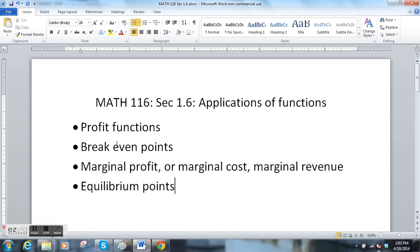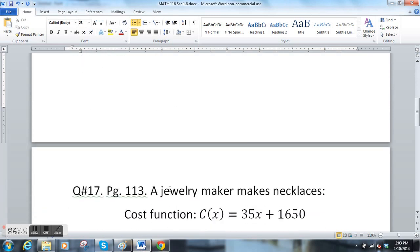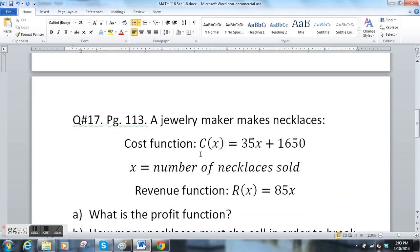I'm going to introduce all three of these topics in one problem and then look at another problem for equilibrium points, so I'll show you some of these terms in an example. Question number 17 on page 113 says a jewelry maker is making necklaces.